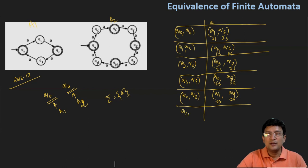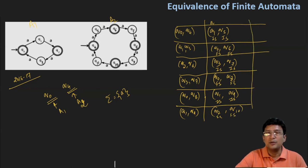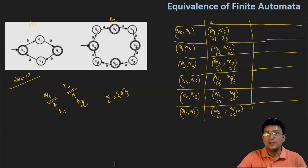The new pair generated is Q1 and Q9. Q1 on getting A moves to Q2, and Q9 on getting A moves to Q10. Both Q2 and Q10 are final states, so there is no discrepancy and I can move ahead with more computations. Note that Q1 and Q9 is a pair we have not taken earlier.